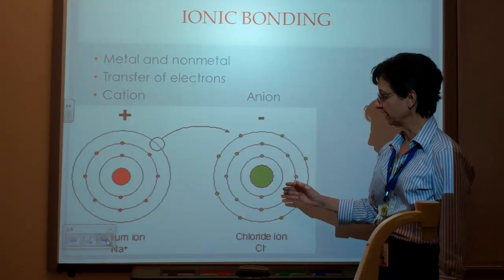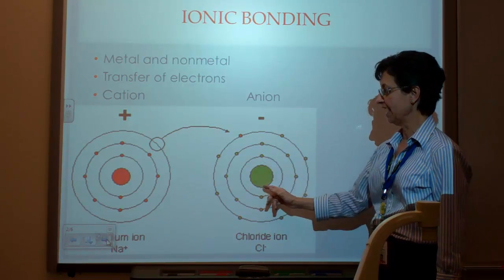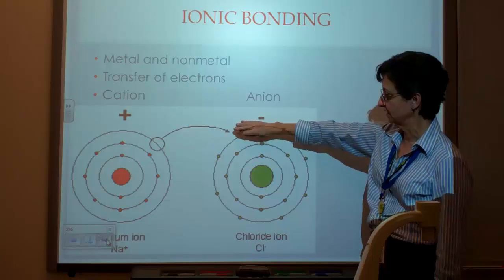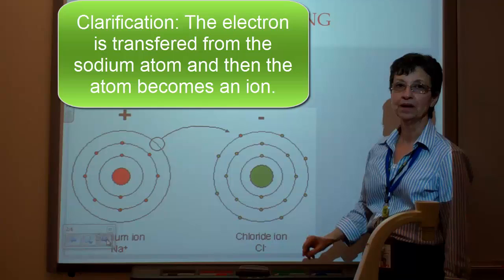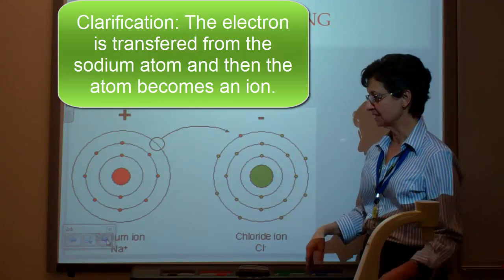Chlorine, on the other hand, has 2, 8, and 7 electrons. That one electron is transferred over from the sodium ion. Then what happens at this point?